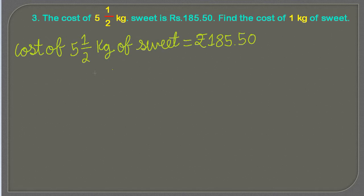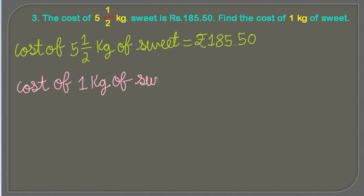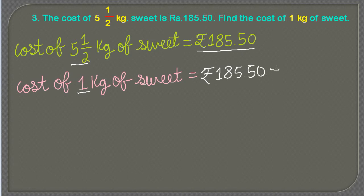Now we have to figure out the cost of one kg of sweet, so we are going to write the second statement. Cost of one kg of sweet is equal to — since the cost of five and a half kg of sweet equals rupees 185.50...